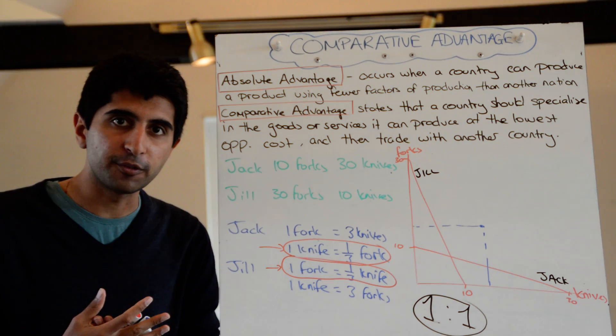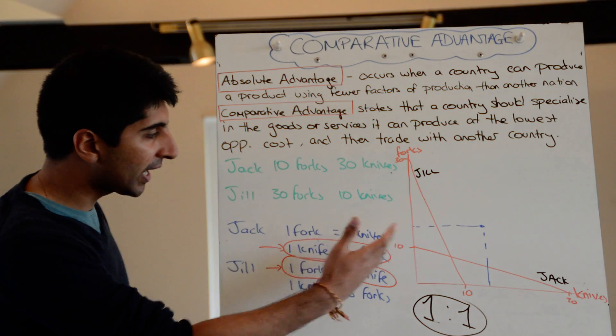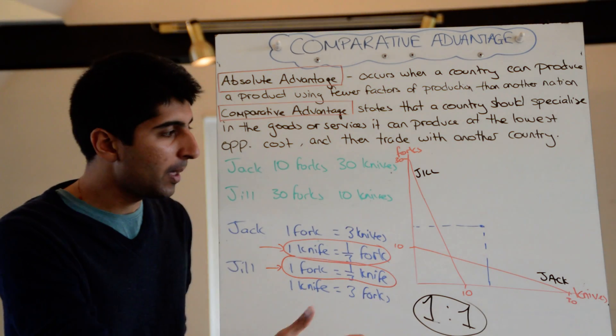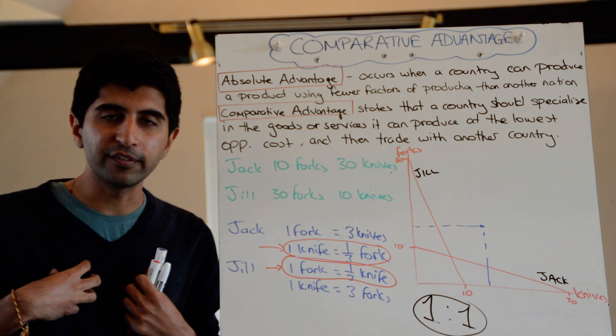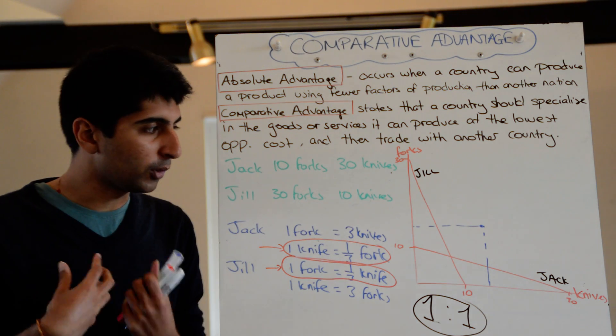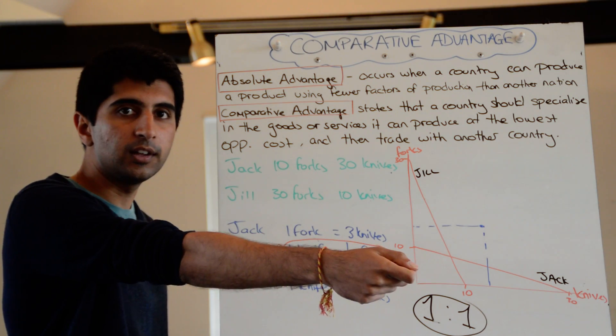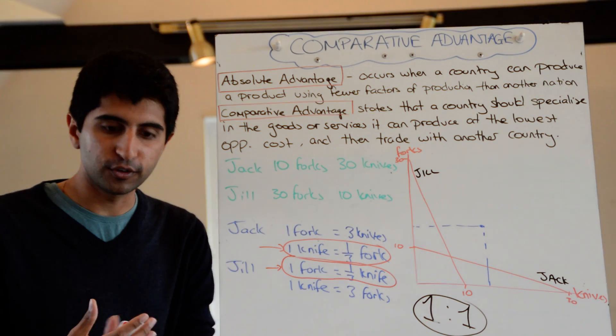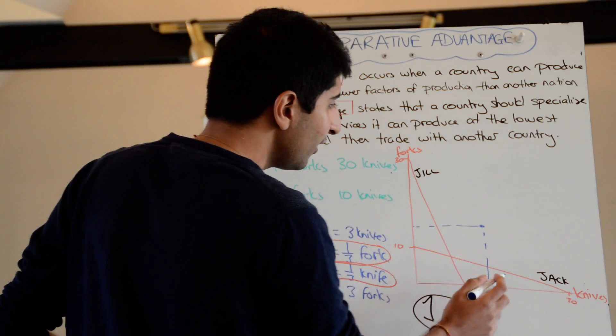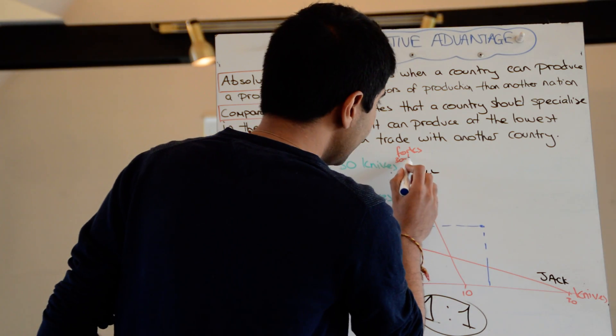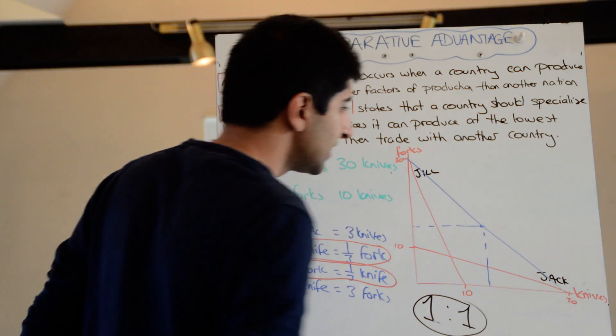And for Jack as well, Jack could produce thirty knives, but if he just produced thirty knives for himself, he wouldn't have any forks. So what he could do is sacrifice fifteen of those knives, sell them to Jill, and gain fifteen forks in return. So what it means, very simply, is that this PPC, this point here, is suddenly actually attainable.